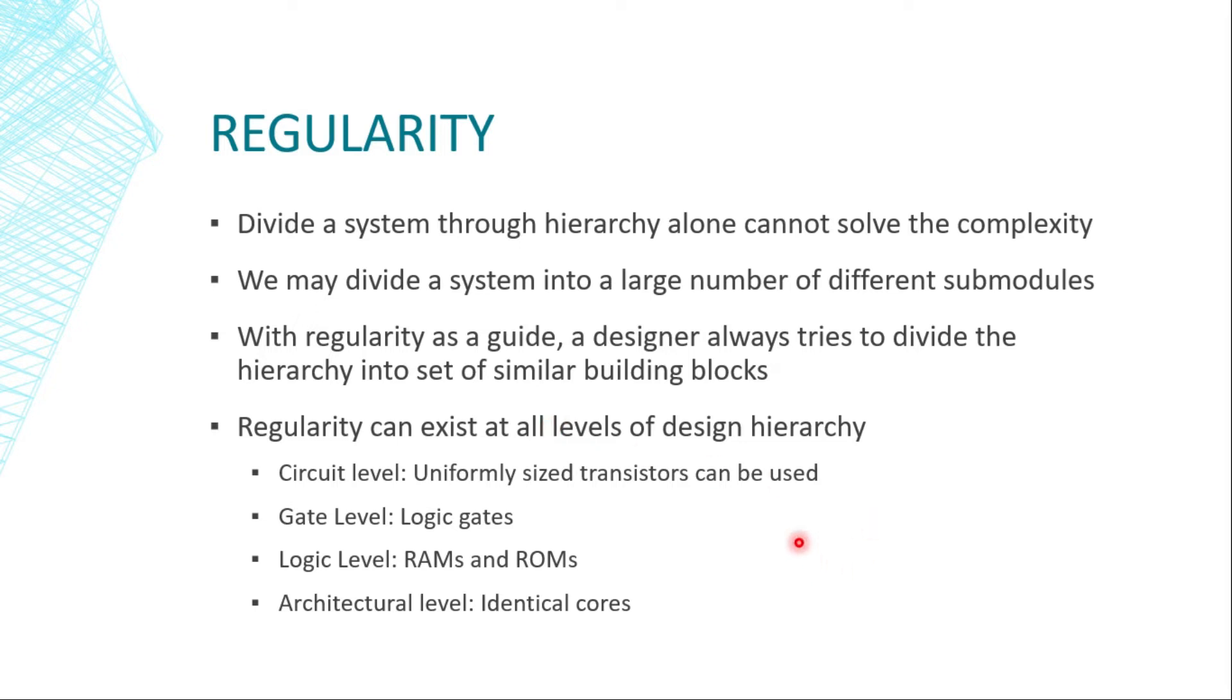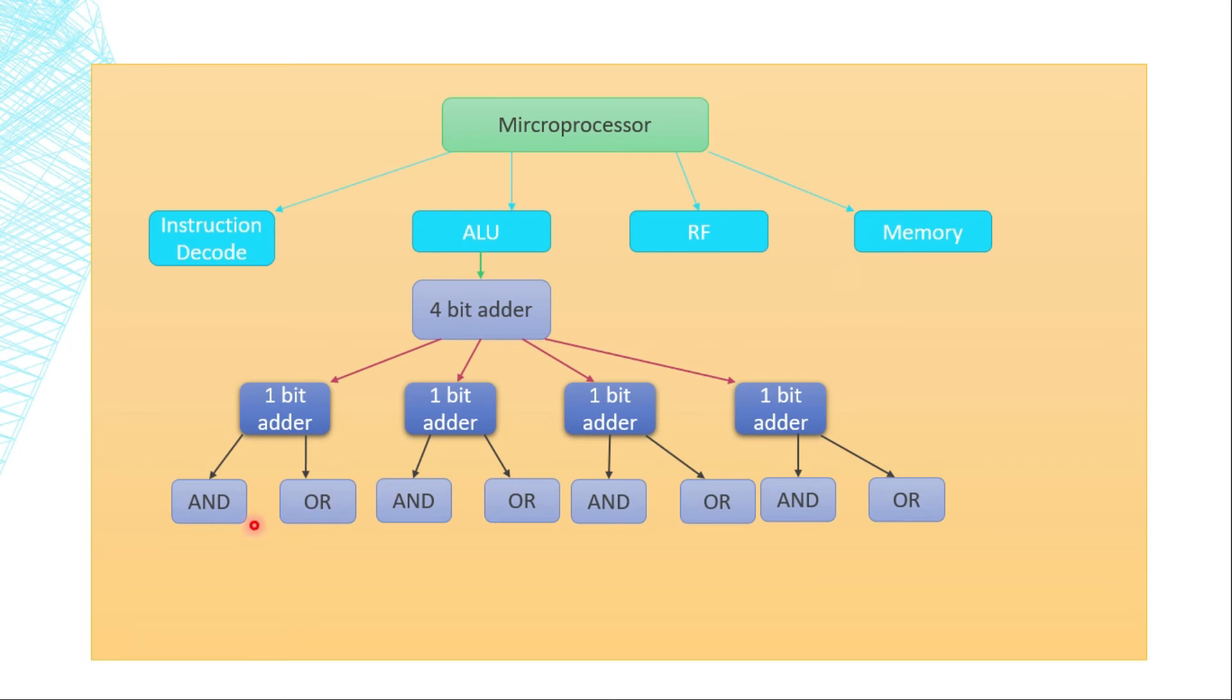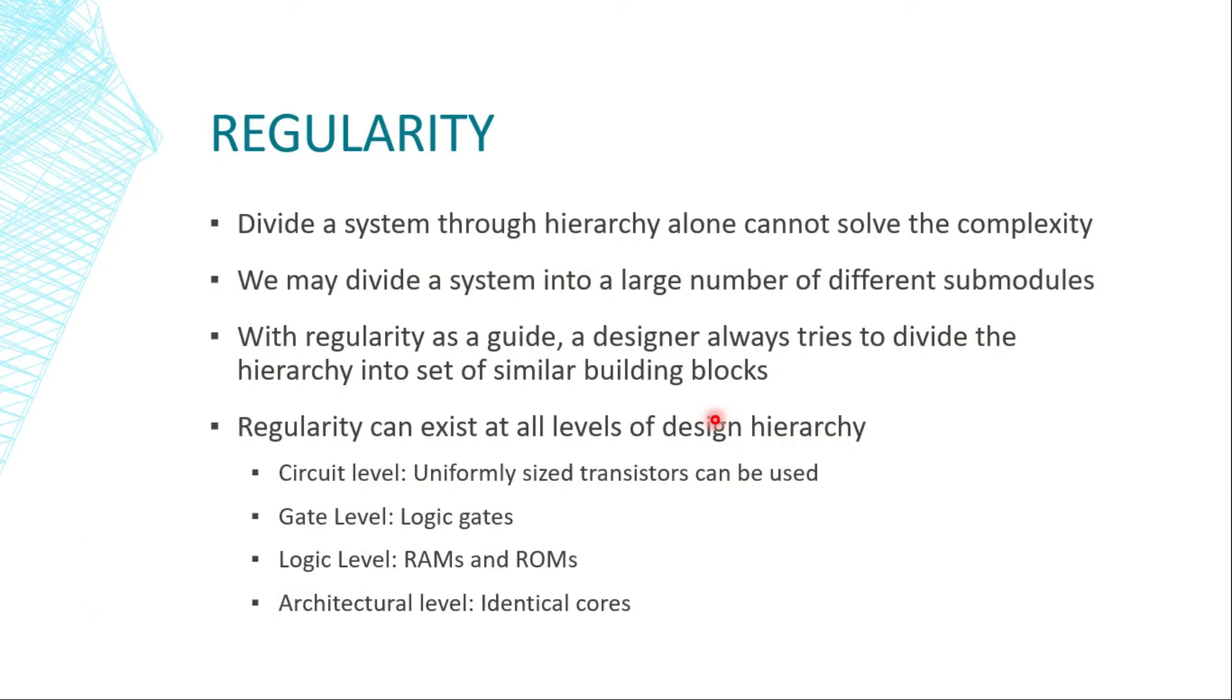This regularity can exist at all levels of design hierarchy. Be it circuit level where we can use uniformly sized transistors or at gate level where logic gates like AND can be used. At logic level, we can use RAMs or ROMs which are all the RAM cells are same. At architectural level, we can use identical cores. The regularity aids in verification efforts by reducing the number of subcomponents to validate. If I am able to verify this 1-bit adder works properly, I just have to ensure that this is working properly and the remaining things will work the same way.